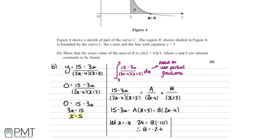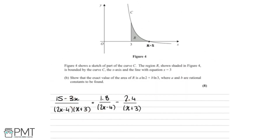To find A, we want to eliminate B by making 2x minus 4 equal zero, so let x equals 2. Substituting into the left-hand side: 15 minus 6 equals 9. The B term is eliminated, and A is multiplied by x plus 3, which is 2 plus 3 equals 5. So 9 equals 5A, therefore A equals 9 divided by 5, which is 1.8. The partial fractions have been written out as 1.8 over 2x minus 4, minus 2.4 over x plus 3.